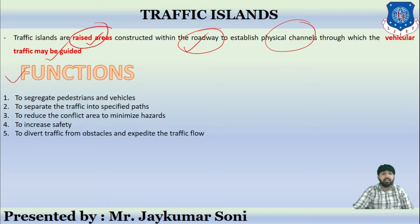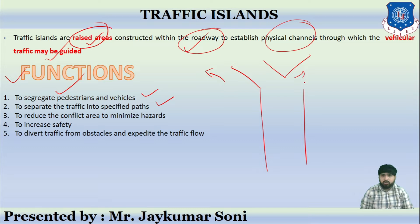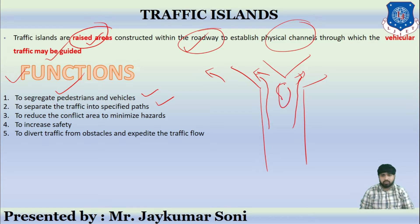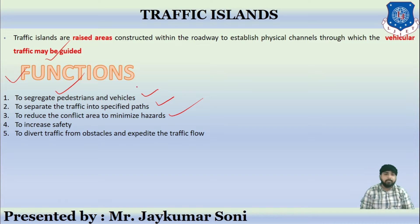The function of a traffic island includes: it is used to segregate pedestrians and vehicles, and it is used to separate traffic into specified paths. For example, if there is a road with two directions, a traffic island can be provided to divert vehicles to either direction. It is also used to reduce the conflict area, because diverting vehicles and pedestrians reduces conflicting areas and increases safety.